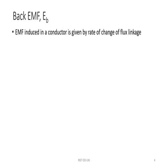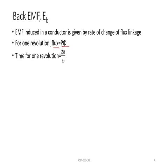Next, we will derive the expression for back EMF. In any conductor, EMF will be induced when it cuts the flux lines, and the EMF induced is given by the rate of change of flux linkage. For one revolution, the total flux is equal to P into flux per pole. Time taken for one revolution is equal to 2 pi by omega, since omega T equals 2 pi radians — completing one revolution covers 2 pi radians, so the time will be 2 pi by omega.